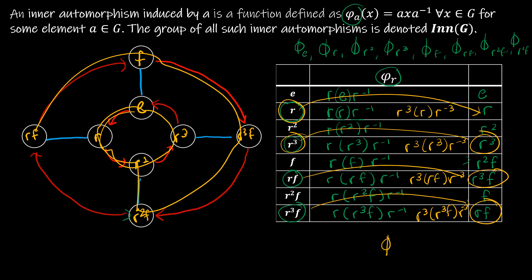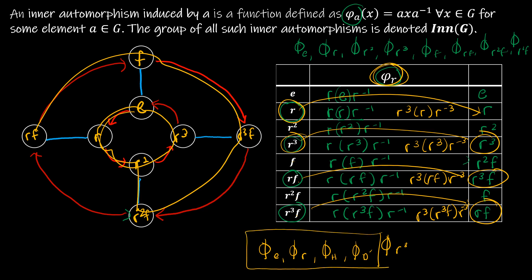So this is the inner automorphism induced by R³, and it is exactly the same as the inner automorphism induced by R. In fact, we end up with only 4 distinct inner automorphisms: φ_R (same as φ_{R³}), φ_E, φ_H (one of the horizontal/vertical flips), and φ_{D'} (one of the diagonals) — four distinct, as opposed to the 8 we might expect.